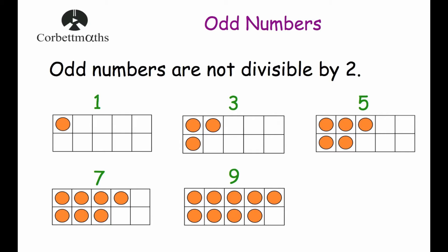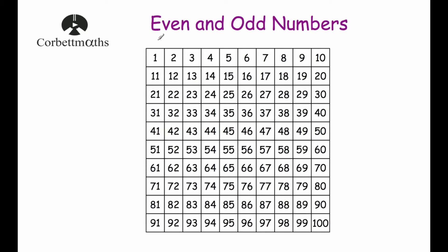Now if we have a look at a number grid going from 1 to 100, the numbers on the number grid are odd, even, odd, even, odd, even and so on.